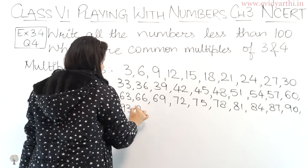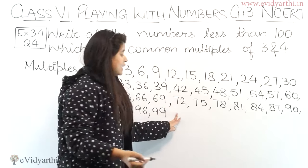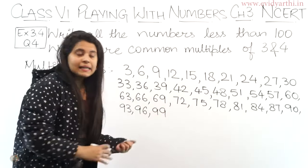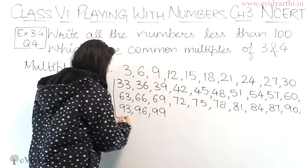After 90, 93, 96, 99. After this comes 102. And we have to write less than 100. So only these will be there. So these are the multiples of 3.